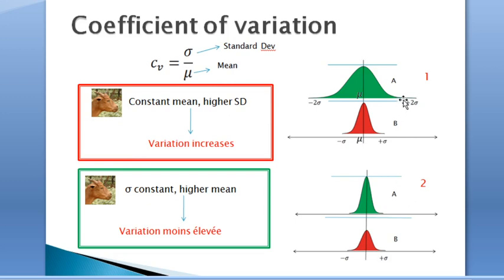Figure one and two here represent two situations. Firstly, when the mean mu is constant and the standard deviation varies, we realize that the variation increases. You can see here we have a wide range of variation between plus or minus two sigma.